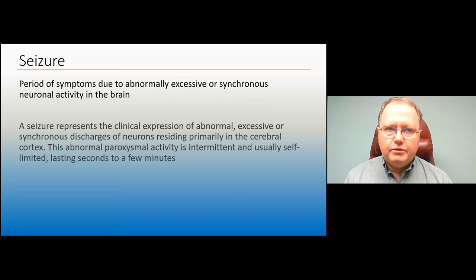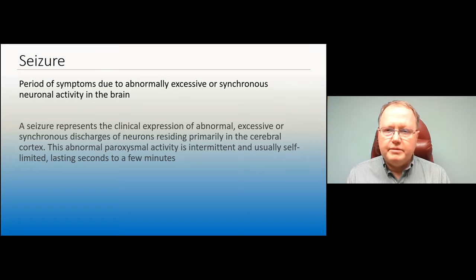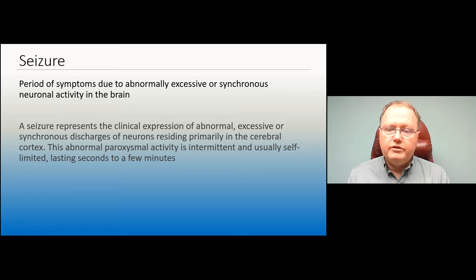So what's a seizure? It's a period of symptoms due to abnormal, excessive, or synchronous neural activity in the brain — a clinical expression of abnormal, synchronous discharges of neurons residing primarily in the cerebral cortex. This activity is intermittent and usually self-limited, lasting seconds to minutes. The vast majority of seizures are less than two minutes. When they go over two minutes, they are very unlikely to stop on their own, and after about five minutes, it often takes more heroic measures to stop them.